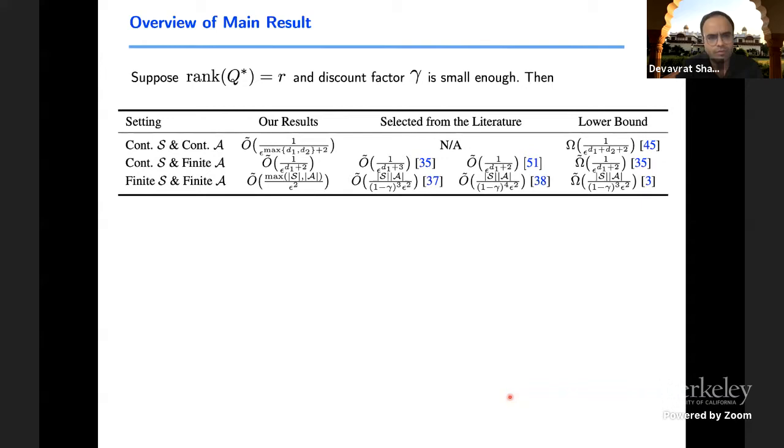So indeed, there are examples where the optimal Q function has finite rank. And as we discussed for any Lipschitz Q function, the delta rank is finite. So with this, here is the overview of main result. If we assume that the optimal Q function is finite rank and discount factor gamma is small enough, smaller than a predefined constant or universal constant, then the sample complexity of learning Q star within epsilon with respect to infinity norm scales as one over maximum of D1 comma D2.